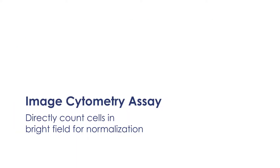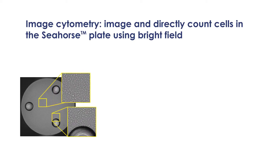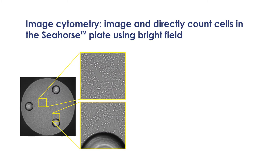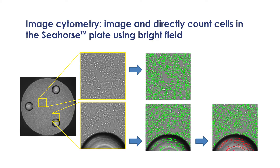In contrast, the image cytometry method images and analyzes acquired images directly from the wells for QC of cell seeding density as well as normalization. High-resolution whole-well brightfield images of the Seahorse XF96 plates are captured. The cells in the wells are then identified and accurately counted by excluding the area of the three posts.